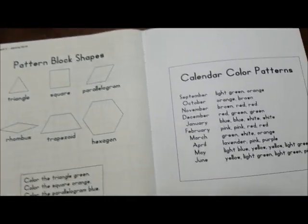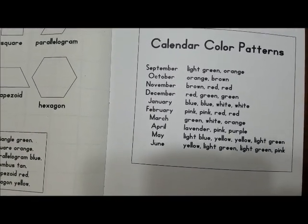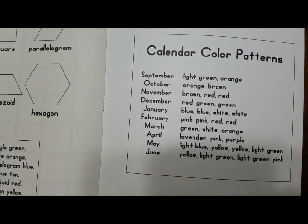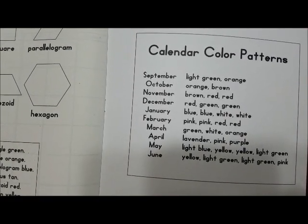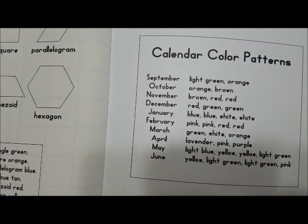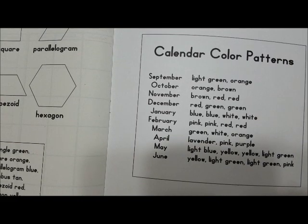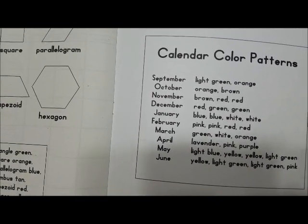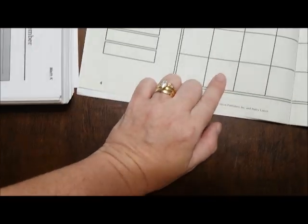Okay, and according to the back of our meeting book, our calendar over here, we are supposed to alternate. The kids are going to color each day. So we are in September, so we would do light green and orange, but we're not going to do that today because we start tomorrow as October. So the colors we'll be alternating then will be orange and brown.